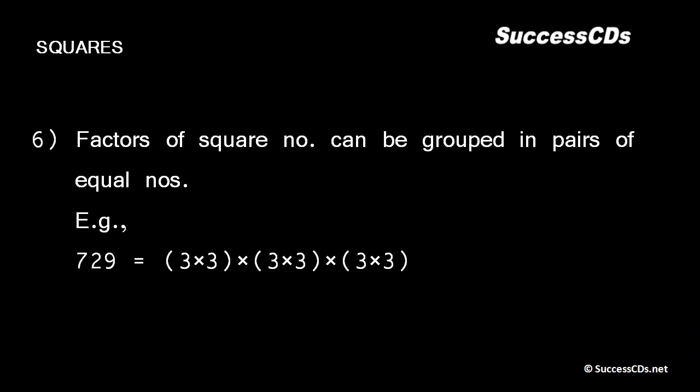Factors of a square number can be grouped in pairs of equal numbers. For example, 729's factors are 3 multiplied 6 times, which means we can make pairs of 3 three times. So factors of a square number can always be grouped together in pairs.